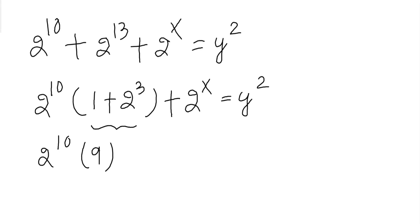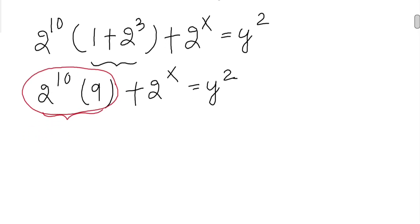This portion is nothing but 2 cubed, 8 plus 1 is 9, and we have 2 to the power x over here. Now we can write this quantity as 2 to the power 5 squared into 3 squared plus 2 to the power x equals y squared.